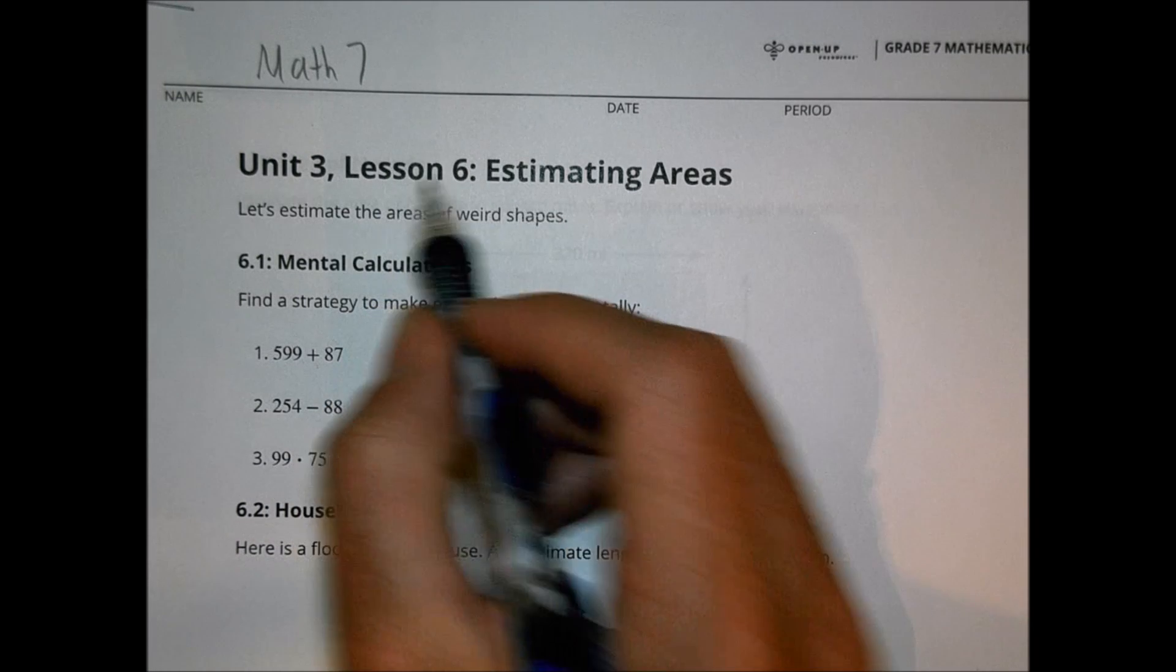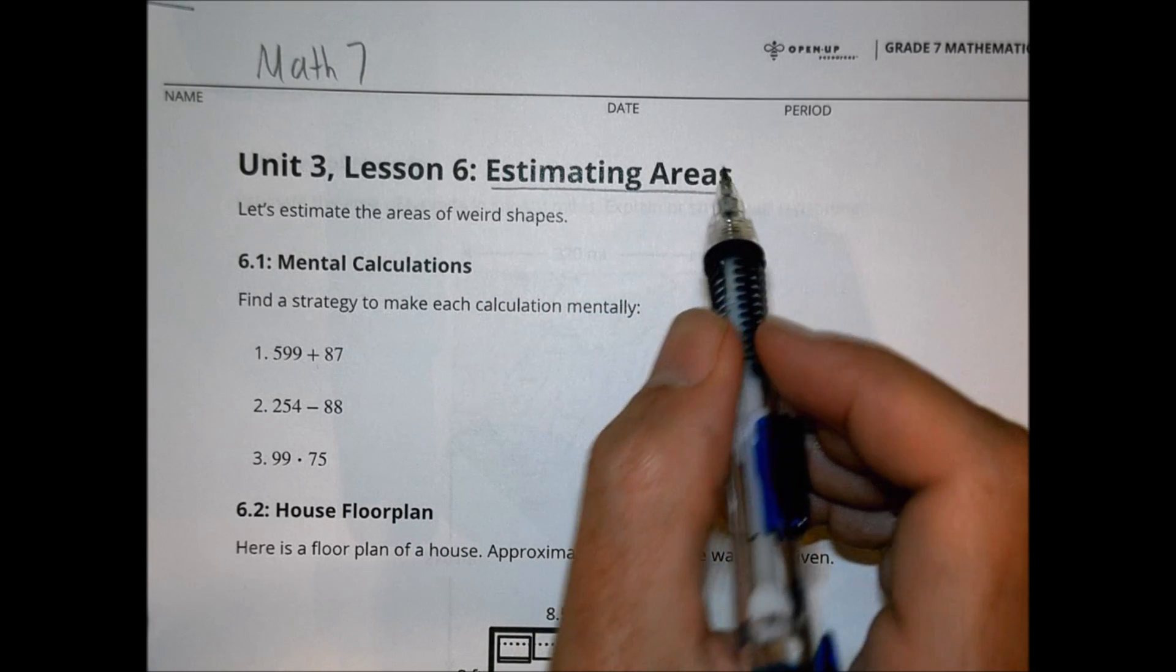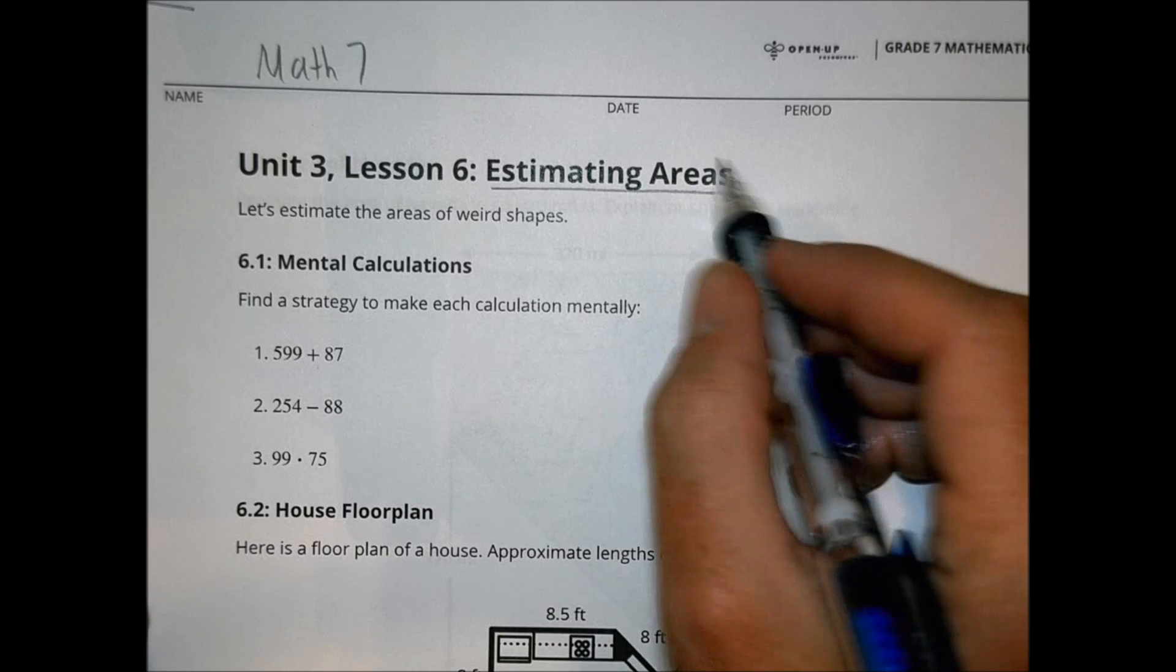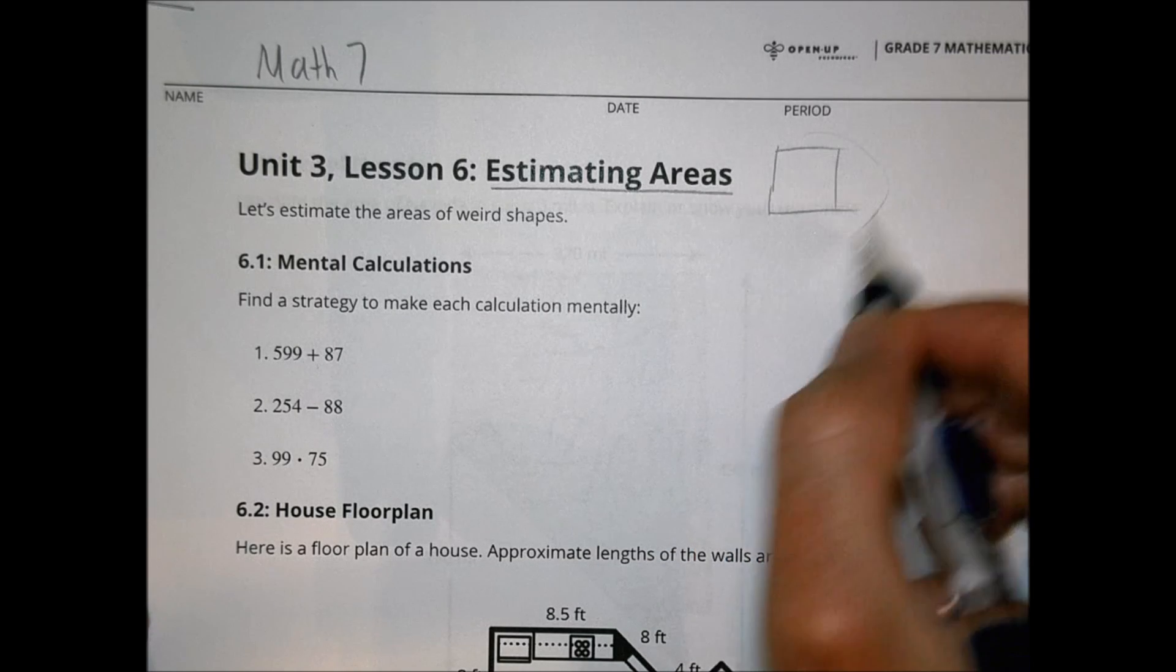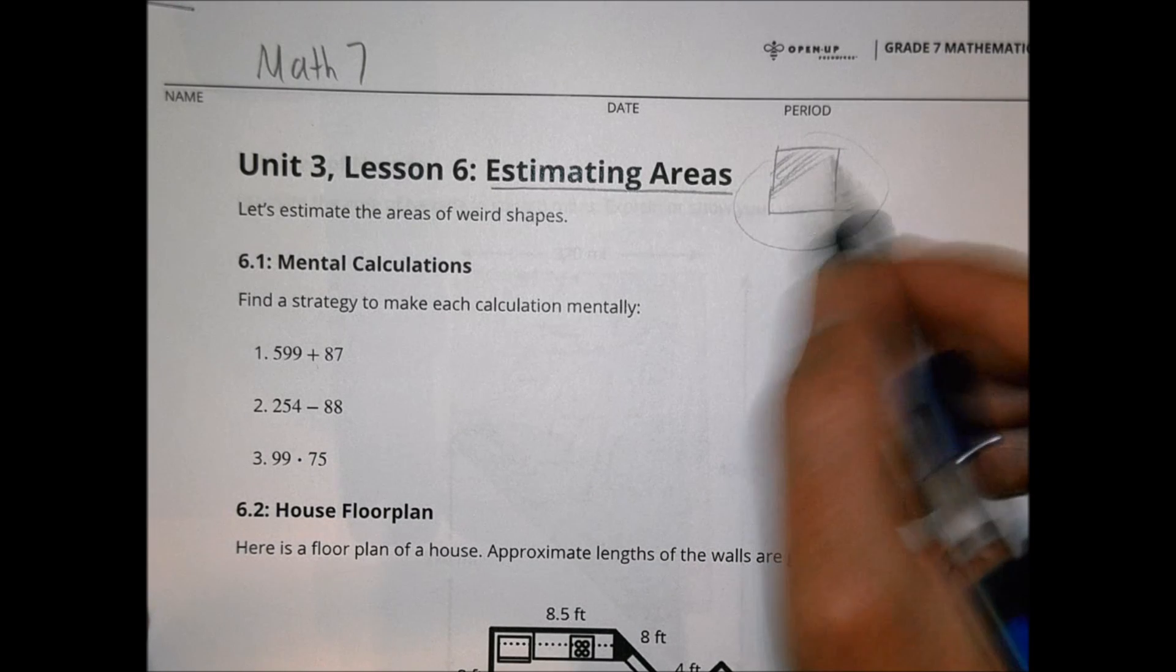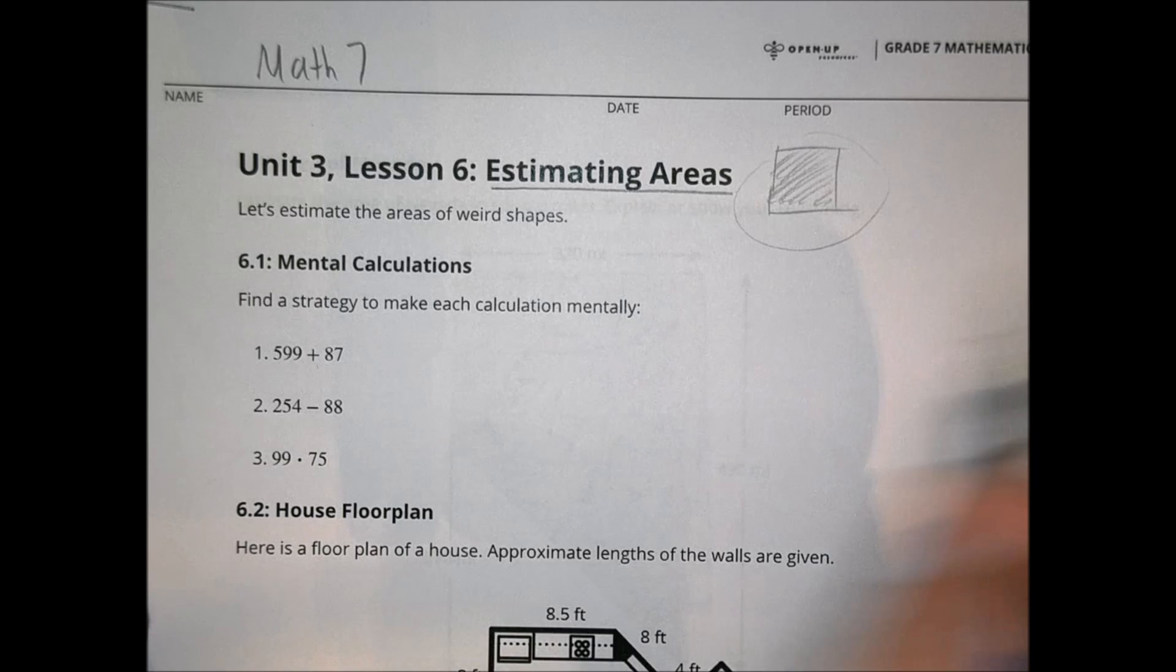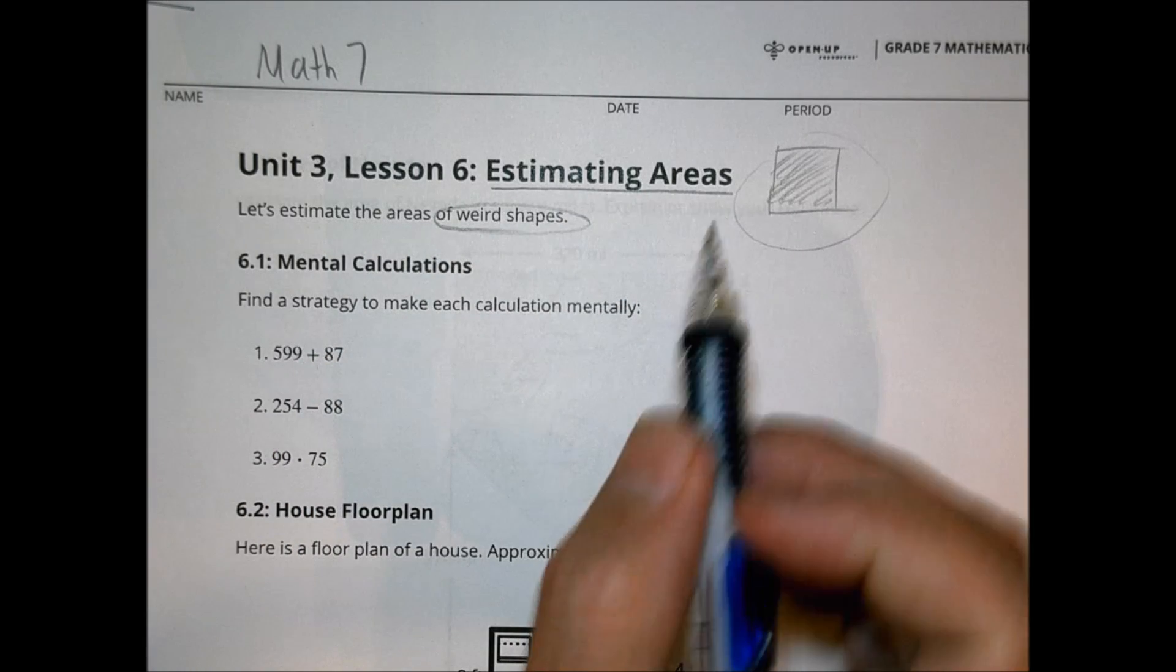Hey, this is Math 7, Unit 3, Lesson 6, talking today about estimating areas. We're moving past the circumference stuff into areas. Area, we're talking not about how far around we go around an object, but we're talking about the space inside of that object today. We're going to do some estimating, first of all, some weird shapes is what we're looking at today.